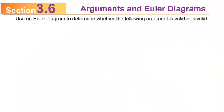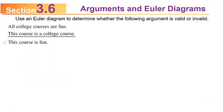Use an Euler diagram to determine whether the following argument is valid or invalid. The premises are: all college courses are fun, and this course is a college course. Therefore, this course is fun. The first two statements above the horizontal line are the premises — the things we're assuming are true. The statement below the line is the conclusion, and that triangle of dots means 'therefore.'